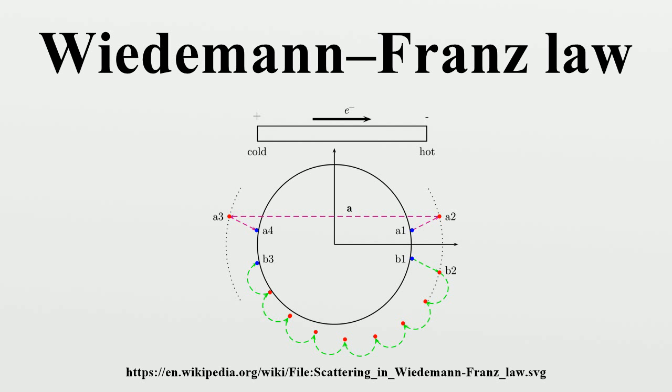Theoretically, the proportionality constant L, known as the Lorenz number, is equal to this. The empirical law is named after Gustave Wiedemann and Rudolf Franz, who in 1853 reported that kappa over sigma has approximately the same value for different metals at the same temperature.